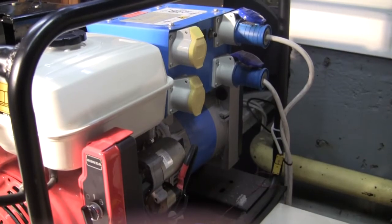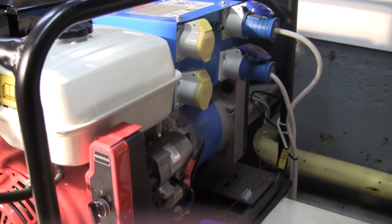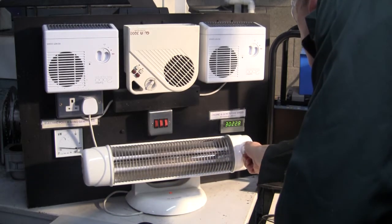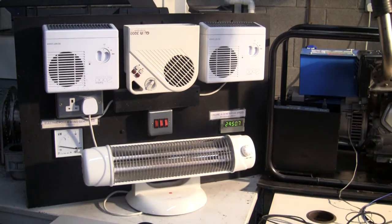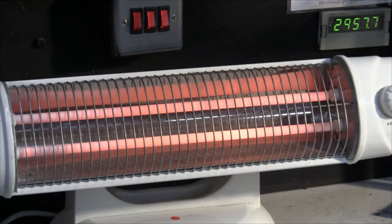The generator takes power from the engine and generates electricity which is then used to power a selection of heaters and lights. By turning on and off these devices we can vary the load on the engine. The electrical power output of the engine is measured by a watt meter.